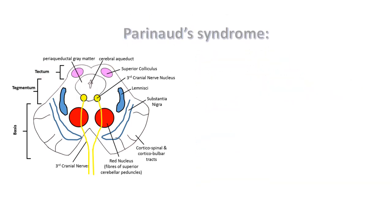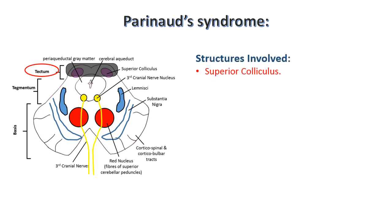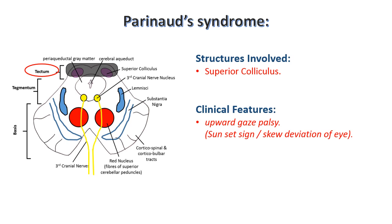Last is Parinaud syndrome. Here there is involvement of the tectum, and this is usually due to a pineal gland tumour which lies above it. The structure involved is the superior colliculus. It is characterized by upward gaze palsy, which is also known as sunset sign or skewed deviation of the eye. Here, other eye movements are not much affected.